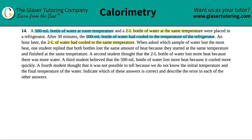One asked which sample of water lost the most heat. One student replied that both bottles lost the same amount of heat because they started at the same temperature and finished at the same temperature. A second student thought that the 2 liter bottle of water lost more heat because there was more water. A third student believed that the 500 milliliter bottle of water lost more heat because it cooled more quickly. And the fourth student thought that it was not possible to tell because we do not know the initial and final temperature of the water.